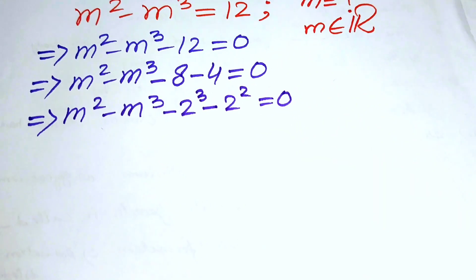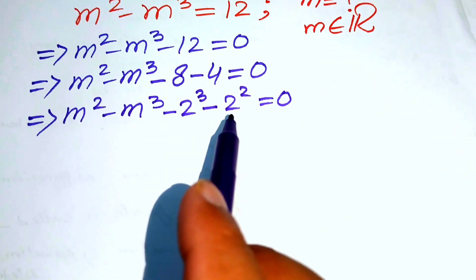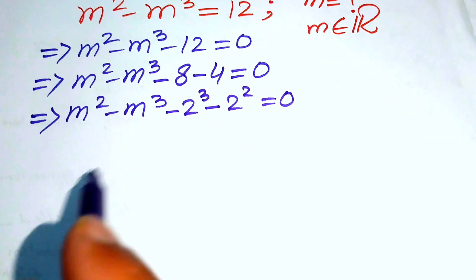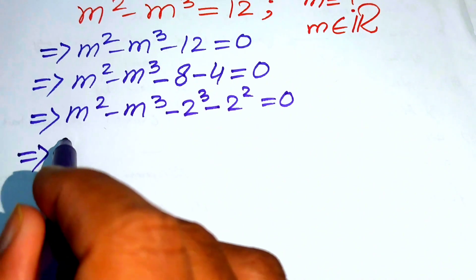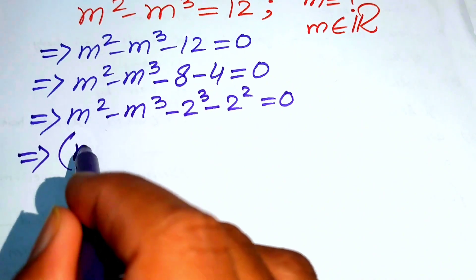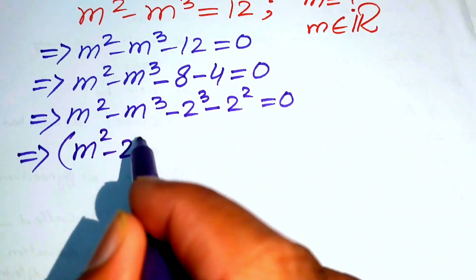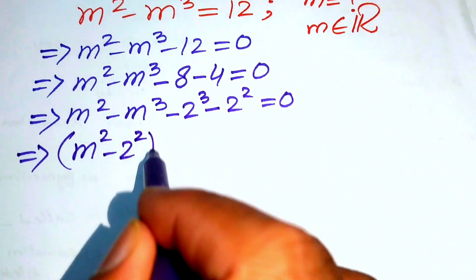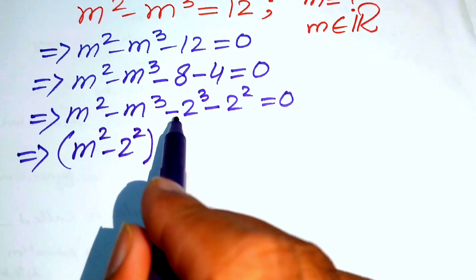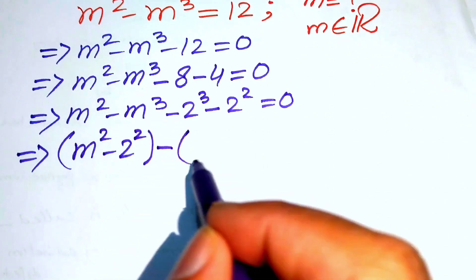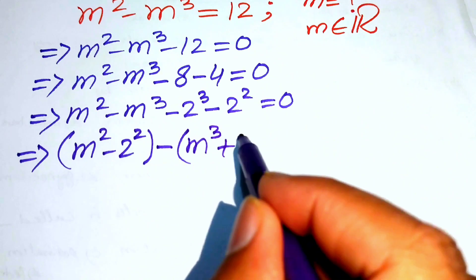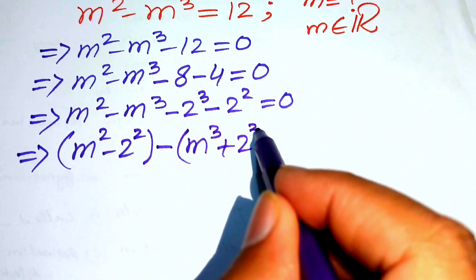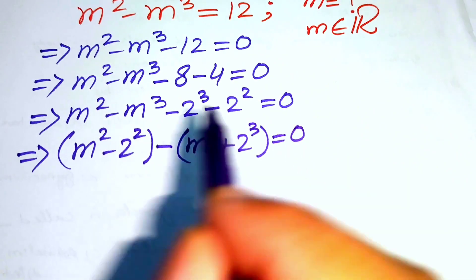In the next step we pair m squared with 2 squared, and m cubed with 2 cubed. We write this as (m squared minus 2 squared), and taking minus common from the other two terms gives minus (m cubed plus 2 cubed) equals 0.